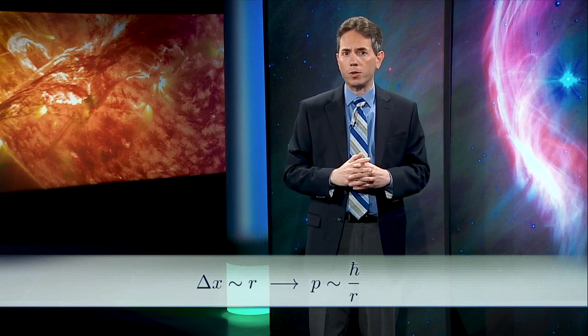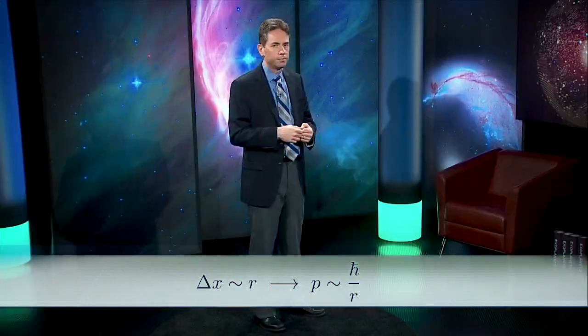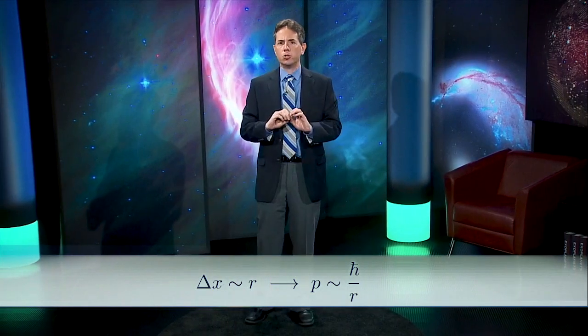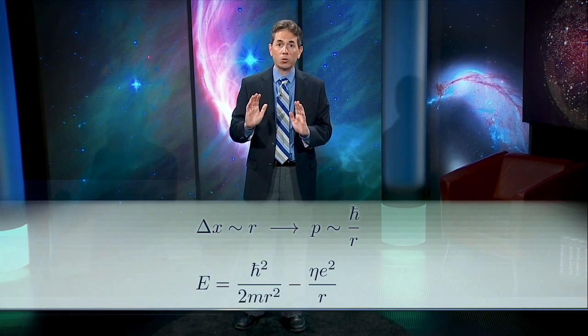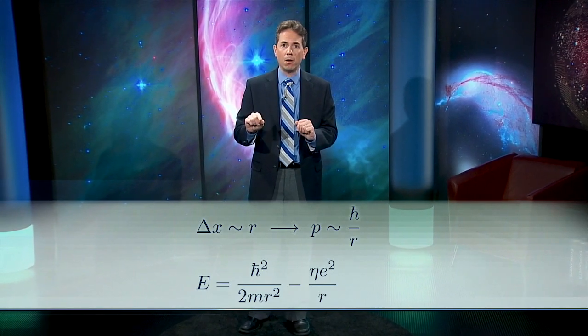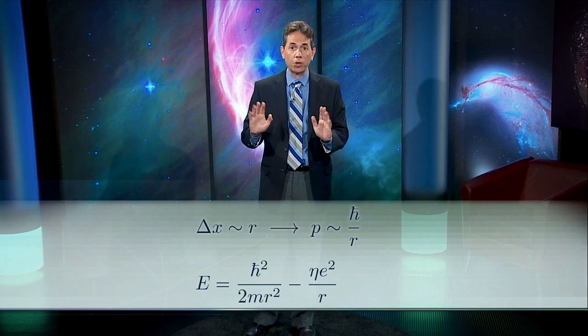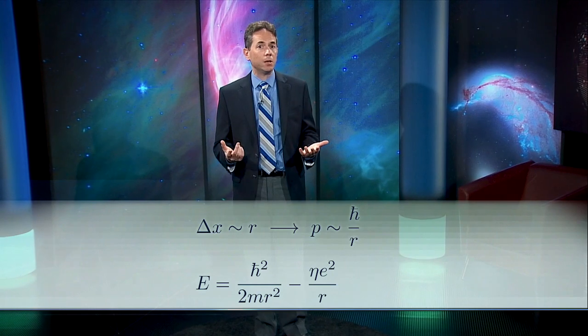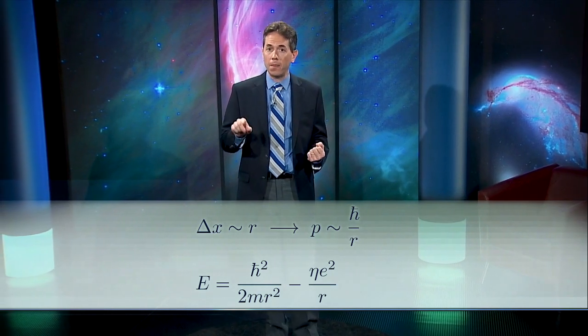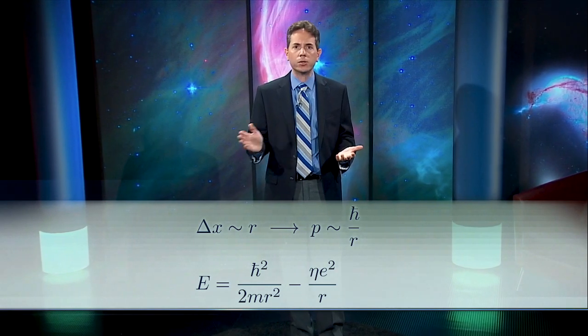With that substitution, we get E equals h-bar squared over r squared over 2m minus eta e squared over r. That's a function of one variable, r. So one way to find the minimum is graphically. We can plug in the numerical values of the constants and then plot E against r. Let's use a logarithmic x-axis to help us see what's going on.